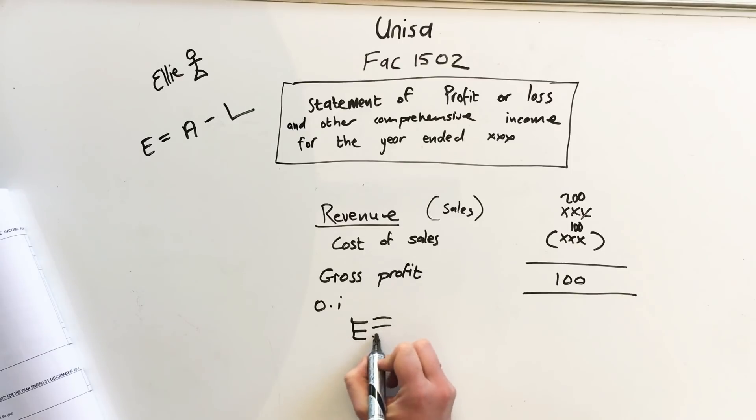Then we have expenses. This will always be a long list of things here, all the expenses we incur to have this business. So this is water and electricity, salaries we need to pay, bills we need to pay, rates and taxes, vehicle expenses like petrol and maintenance, insurance, advertising, depreciation. All of our expenses, all the expenses they give you come here.